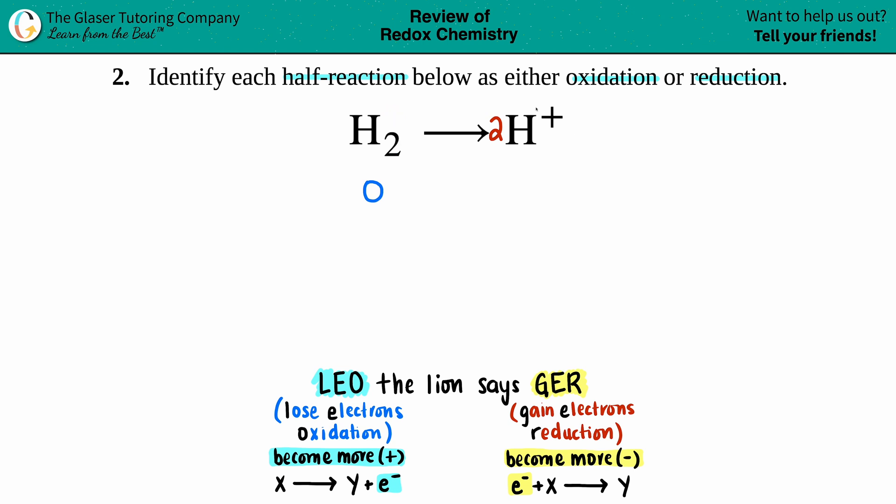Now on the other side we do see a plus charge, that means it's a plus one. And remember, to get the full charge you always take your coefficient and multiply it by that charge. So two times a plus one is an overall plus two.